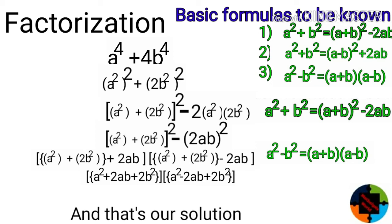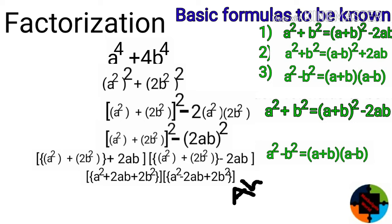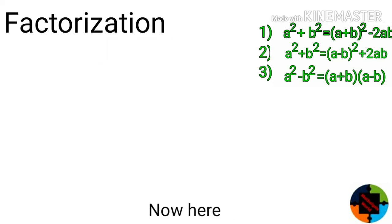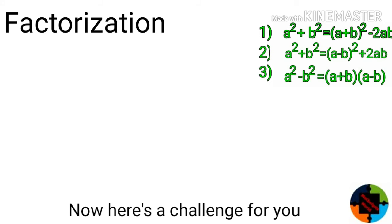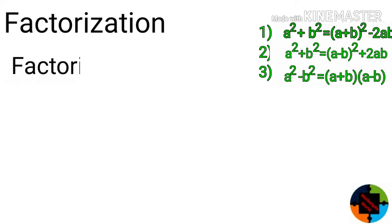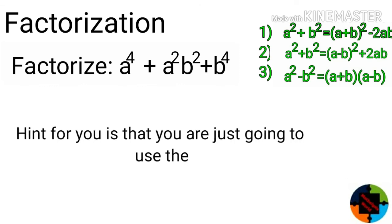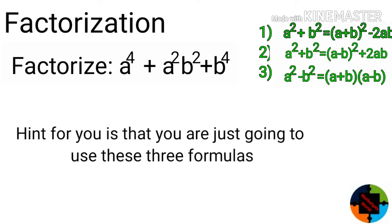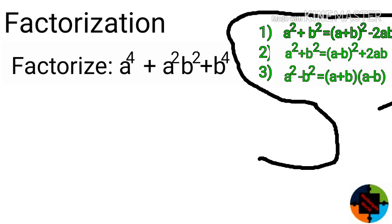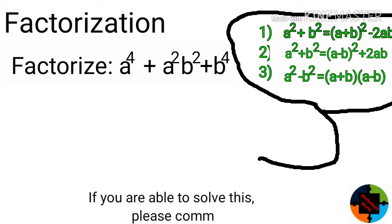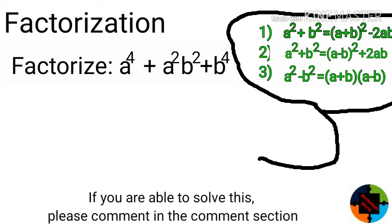And that's our solution. Now here's a challenge for you: factorize a to the power 4 plus a squared b squared plus b to the power 4. The hint is that you are going to use only these three formulas written above. If you are able to solve this problem, please comment in the comment section.